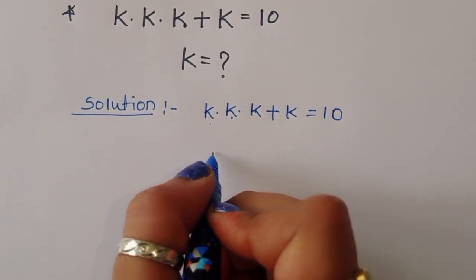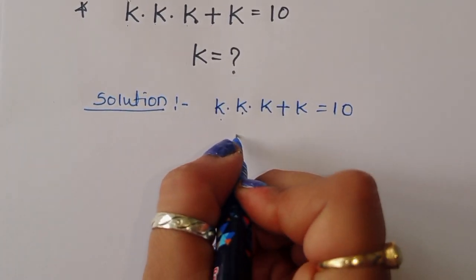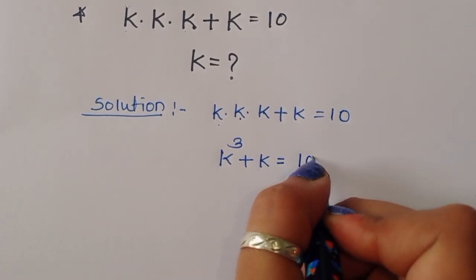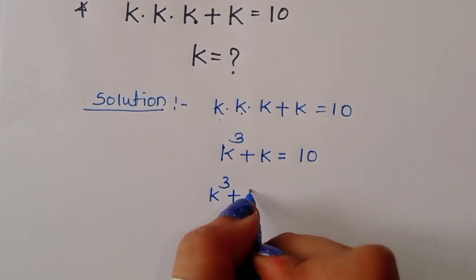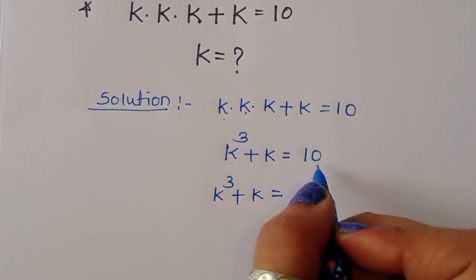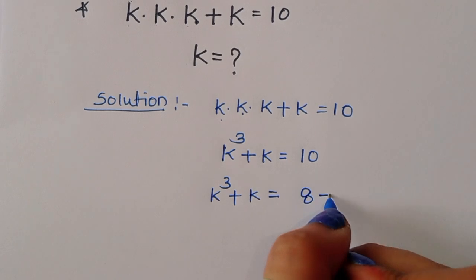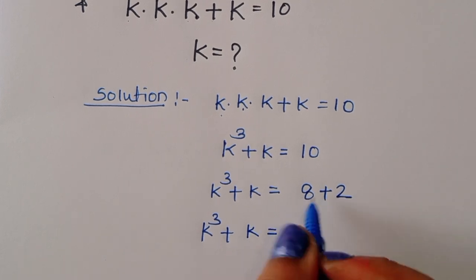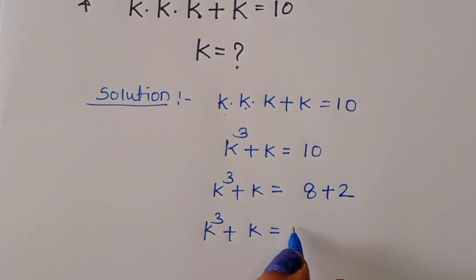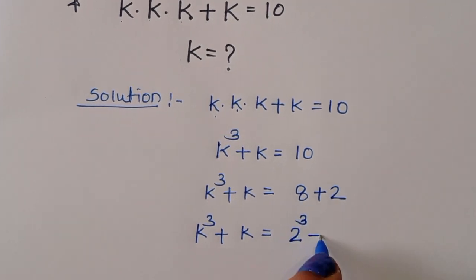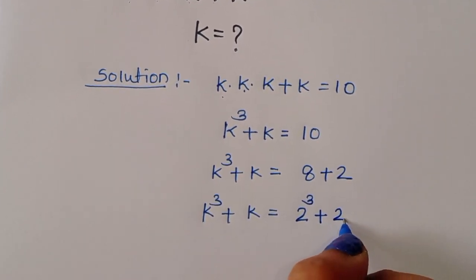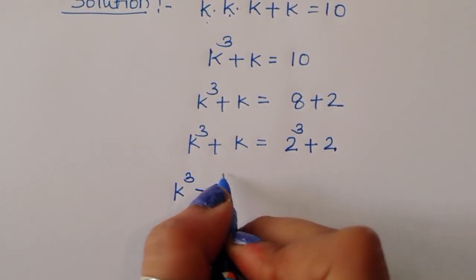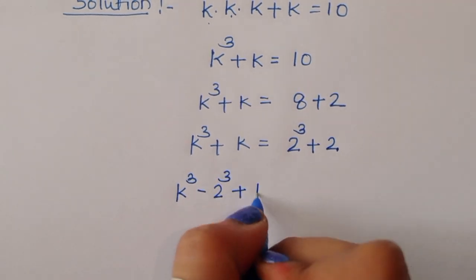We can write this as k cubed plus k is equal to 10. Now k cubed plus k equals 10. We can write 10 as 8 plus 2. So k cubed plus k equals 8 plus 2, and 8 can be written in cube form as 2 cubed, plus 2.